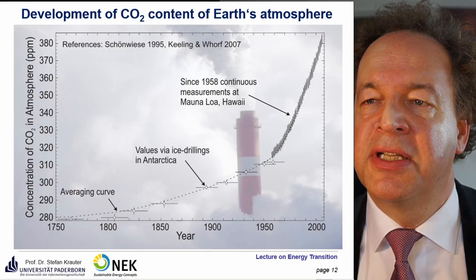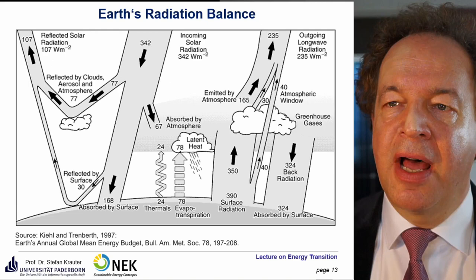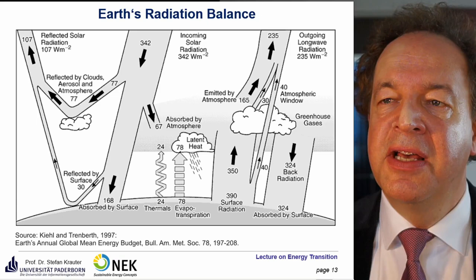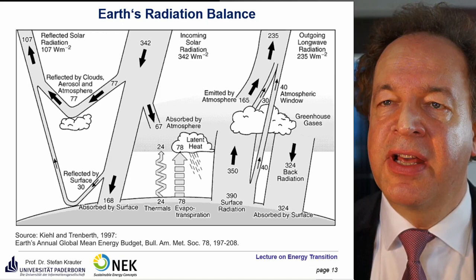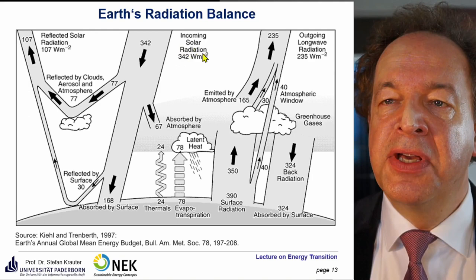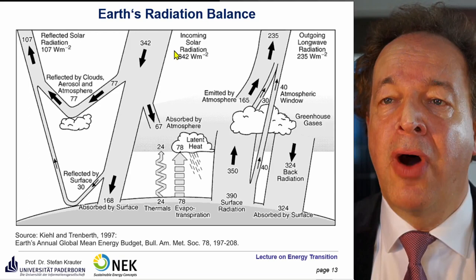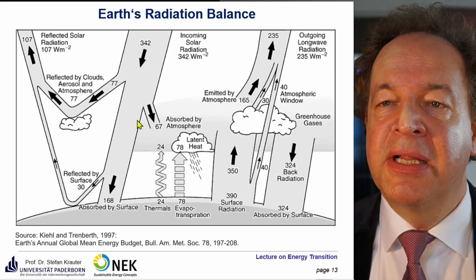Currently we have a CO₂ concentration of about 418 parts per million. CO₂ is transparent in the visible light spectrum but not in the infrared — this impacts the Earth's radiation balance. The incoming average solar radiation is 342 W/m², averaged over seasons, day and night. Direct sunlight is about 1000 W/m² and above the atmosphere approximately 1350 W/m².